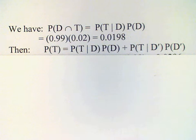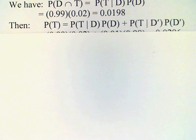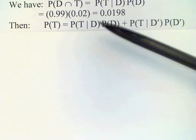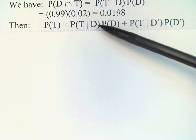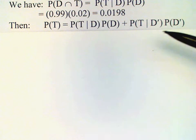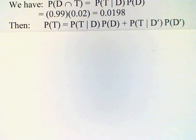Next, we want to find the probability of a positive test. This is going to be the sum of two probabilities: the probability that the test is positive given that the person uses the drug, times the probability that the person uses the drug, plus the probability of a positive test if the person does not use the drug — the false positive situation — multiplied by the probability of a false positive.